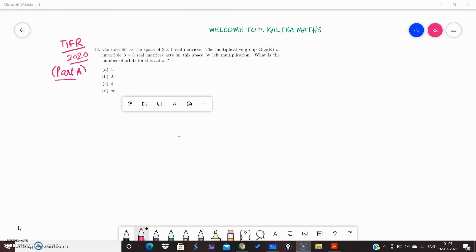Consider R³ as a space of 3×1 real matrices. That means R³, the space is a collection of vectors where xᵢ's belong to real numbers.